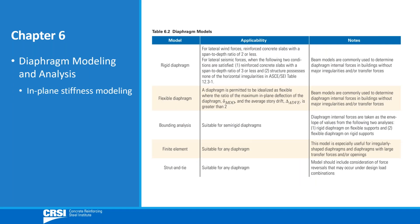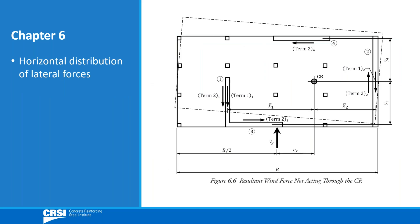Chapter 6 contains methods on how to model and analyze diaphragms for in-plane force effects. Included is an approximate method of analysis and horizontal distribution of in-plane diaphragm forces to the vertical elements of the lateral force resisting system.